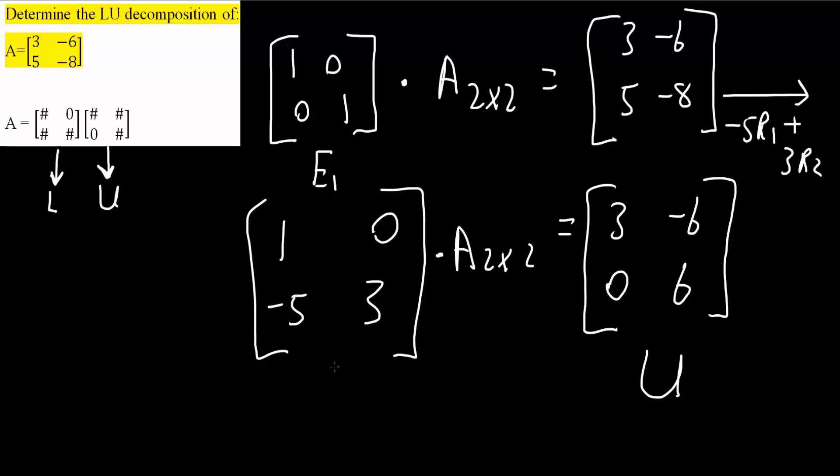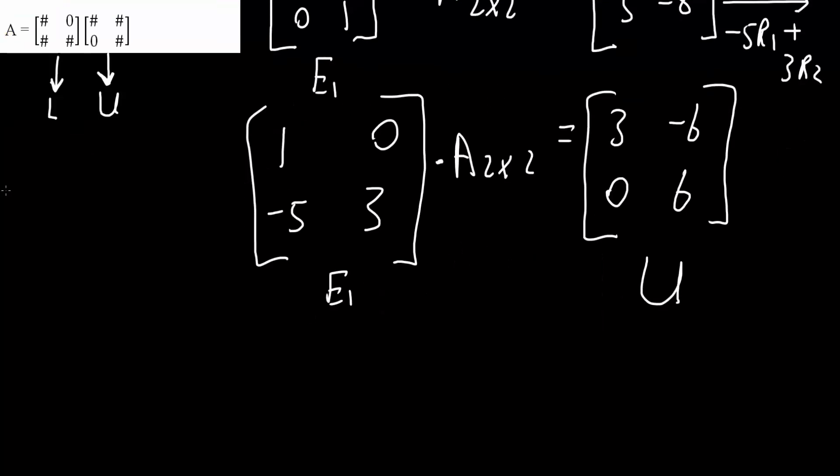And so, this right here, we can call it E₁. It would be L if it is on this side. But since it's on the left-hand side, it's not L yet. We're close to getting this to become L. And so, an idea, or I guess you could call it a rule, is that A is equal to E⁻¹ times U. We got U, and E inverse, and E inverse is equivalent to L.